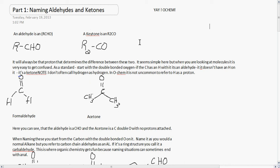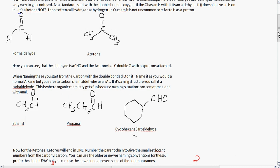It will always be that proton that determines the difference between these two. It seems simple, but when you are looking at molecules it's very easy to get confused. So as a standard, just start with a double bonded oxygen. If the carbon has an H with it, it's an aldehyde. If it doesn't have an H on it, it's a ketone. Make a note that in organic chemistry I don't often call hydrogen as hydrogen, generally it's referred to as a proton.